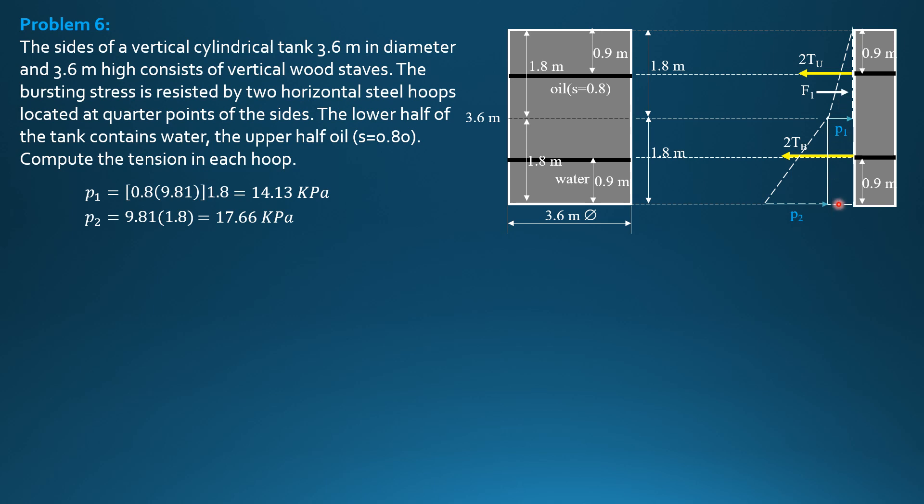Let's have the forces. F1, the distance from the top is two thirds of 1.8, 1.2 minus 0.9, so its distance from the hoop is 0.3. 0.3 from the hoop, then because this is 1.8 minus 0.3, so 1.5 from the bottom hoop or from the lower hoop. Then F2 due to this rectangular pressure diagram, so it is exactly acting at the center of this bottom hoop, F2.